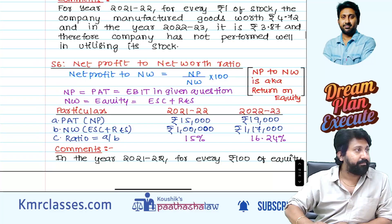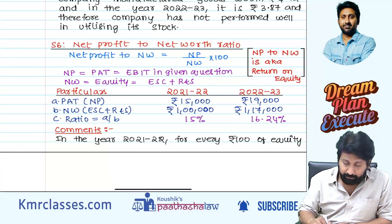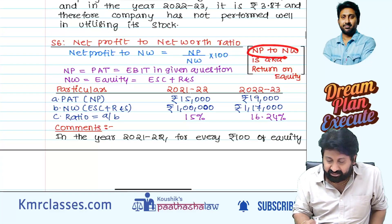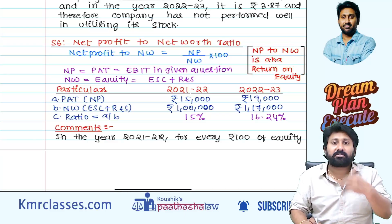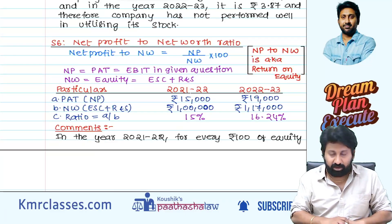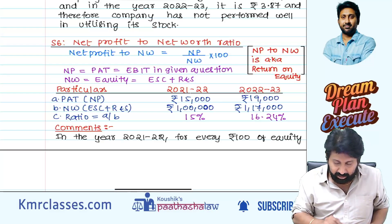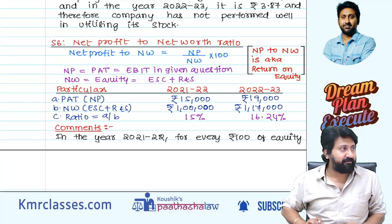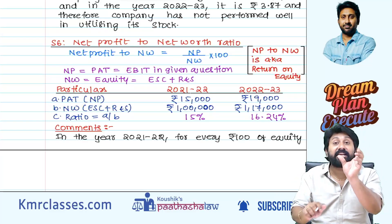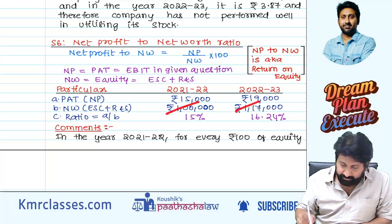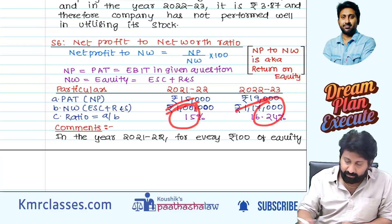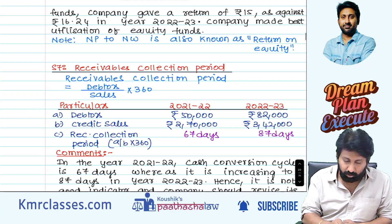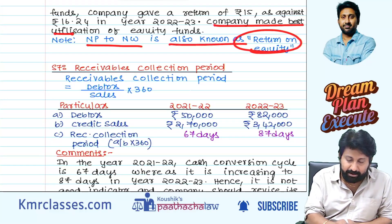Net profit to net worth ratio: net profit by net worth into 100 — very very important adjustment. Net profit to net worth is also called return on equity. Equity shareholders want profit after tax return. In this question, tax and interest are not there, so profit after tax is nothing but EBIT. Net worth means balance sheet values of equity share capital and reserves and surplus — not market values. More the return on equity, better the company.